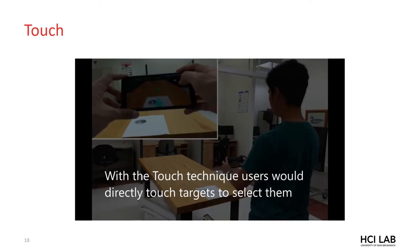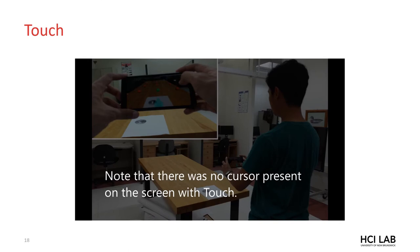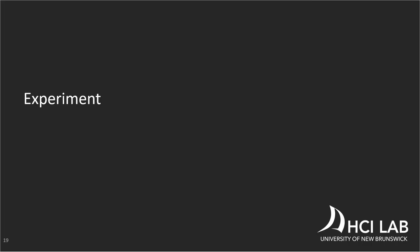So next, I'll tell you about the experiment where we compare the three target assistance techniques and the baseline technique against the standard touch interaction. To assess whether our adopted target assistance techniques actually make target selection faster and less error-prone, we conducted an experiment. In the experiment, we compared the three target assistance techniques to the two control techniques, which were touch and baseline.